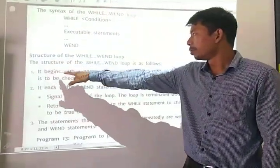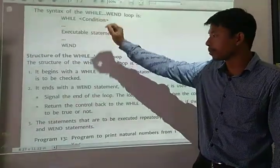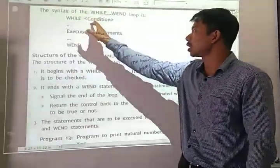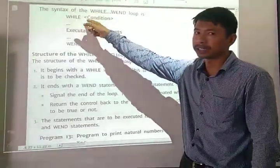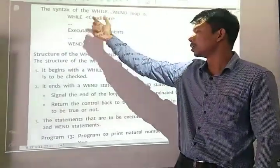Now the structure. It begins with the WHILE statement - this is the first line. This statement is used to define the condition to be checked. The condition will be on the first line, like x is greater than 5 or x is less than 5.